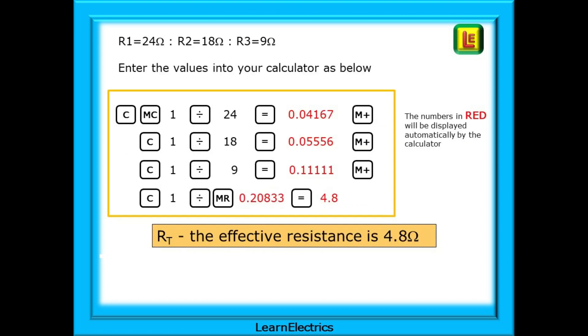We are told that R1 is 24 ohms, R2 is 18 ohms, and R3 is 9 ohms. We must calculate the effective resistance, the total resistance. On my calculator, and most are similar, I would enter the values as follows. And a quick note, if you make a mistake, and miss out a number, press a key twice, etc., you may need to start the calculation again. Accuracy of data entry is important, so take your time. I would start with the clear key, the C, to clear any data in the calculator, and then the MC key to clear the memory. Now I know that I'm working from a blank sheet.